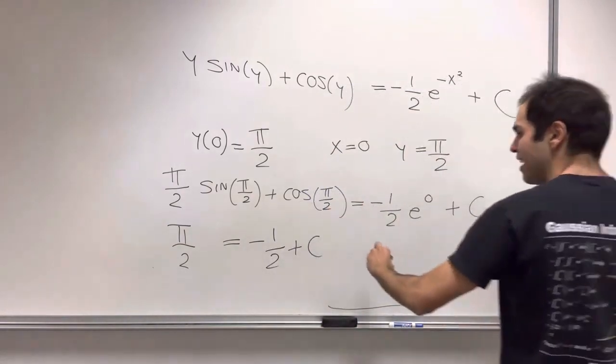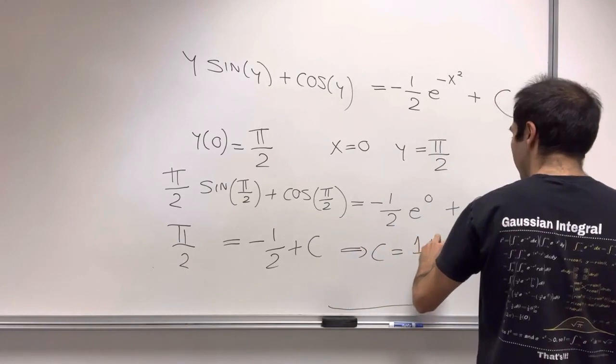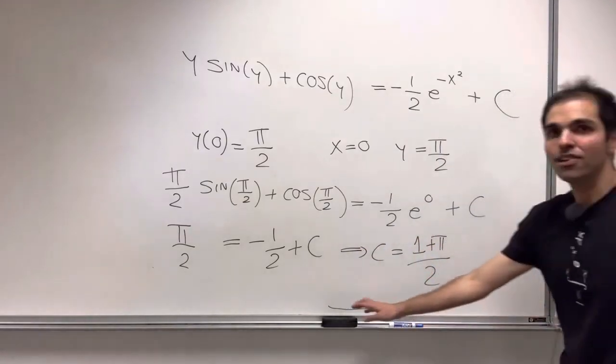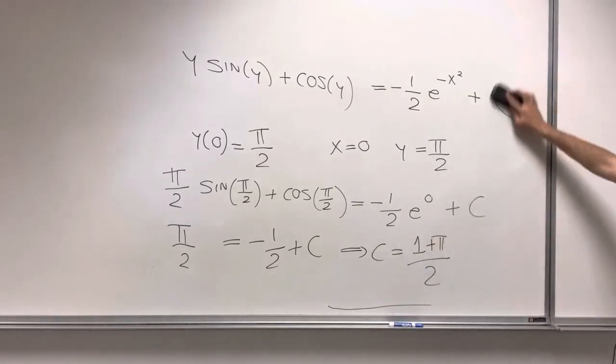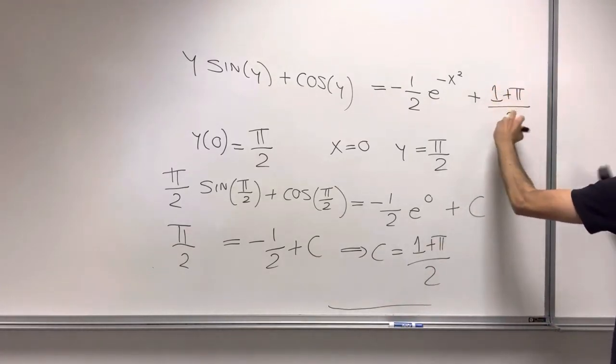So then what we get is the constant is 1 plus pi over 2. And we can plug this in here. 1 plus pi over 2.